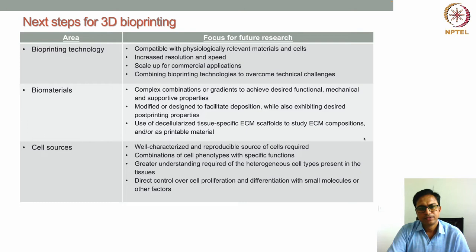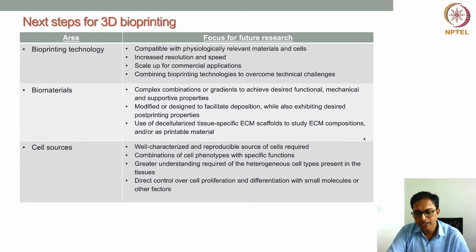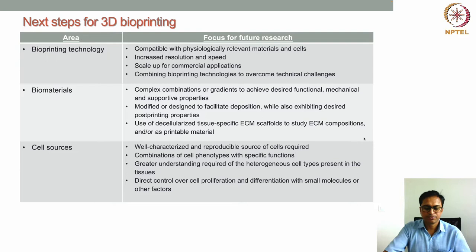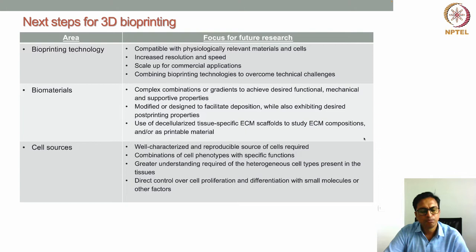In this lecture we will discuss what are the next steps required for further progressing of organ printing technology to actually realize the potential of producing artificial tissues and organs. We have been discussing the various aspects of this technology, starting from what is 3D bioprinting, what are the different types of 3D bioprinting techniques, their strengths and limitations, critical parameters, and applications.